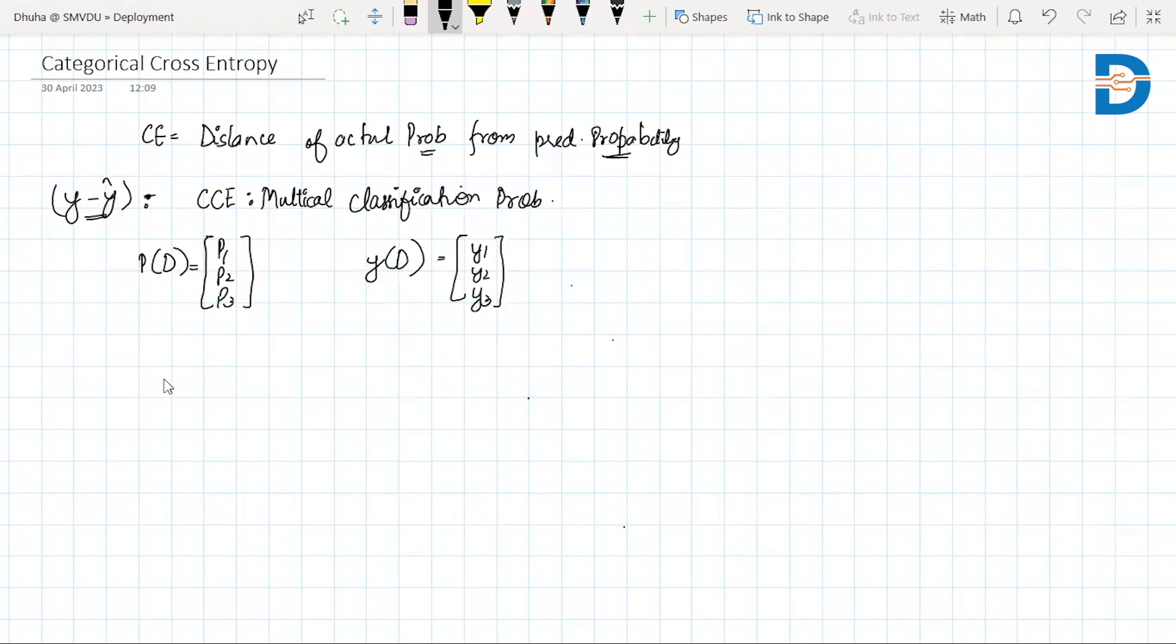We calculate categorical cross entropy of the two probabilities as minus y_t log of p, where y_t represents all the actual values and log of p represents all the predicted values. If we expand this, we can write it as minus (y1 log p1 plus y2 log p2 plus y3 log p3).